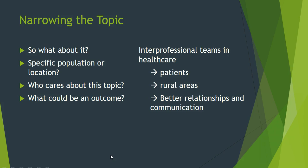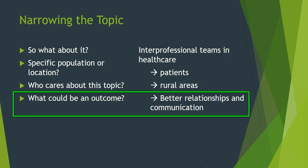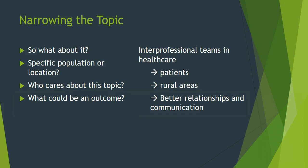Now that you may have a general topic — such as interprofessional teams in healthcare — you can start thinking about narrowing it down. Is there a specific population or location you want to zone in on? For example, maybe I want to think about interprofessional teams in healthcare and improving patient views of healthcare professionals, and I want to focus on rural areas since I live in rural Appalachia. Something else to think about is what the outcome could be — such as improving the patient and physician relationship and communication.